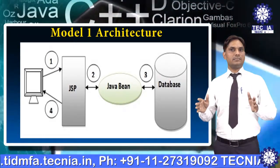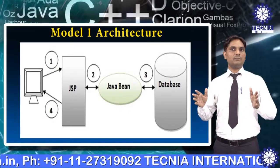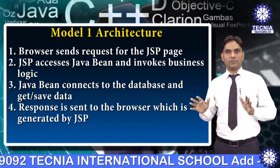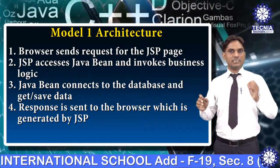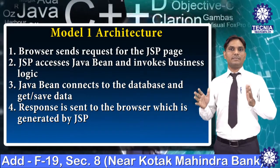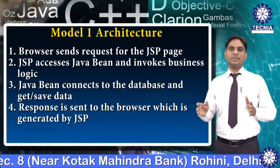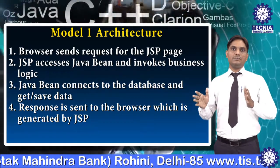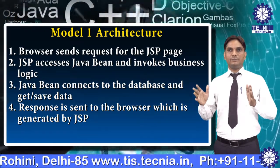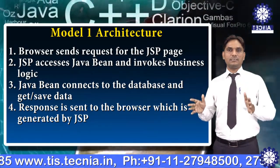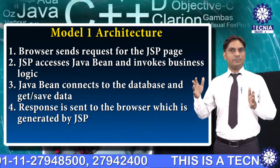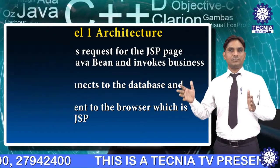As you can see in the above figure, there is a diagram showing the flow of the Model 1 architecture. The browser sends a request for the JSP page. Then JSP accesses JavaBean and invokes business logic. JavaBean connects to the database, gets and saves data. The response is sent back to the browser, generated by JSP. This diagram is based on Model 1 architecture.